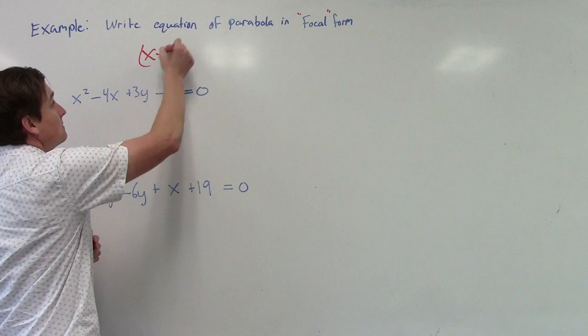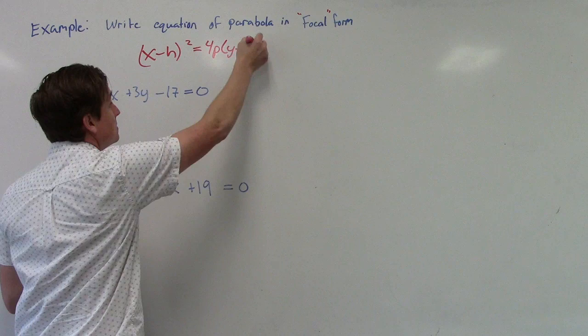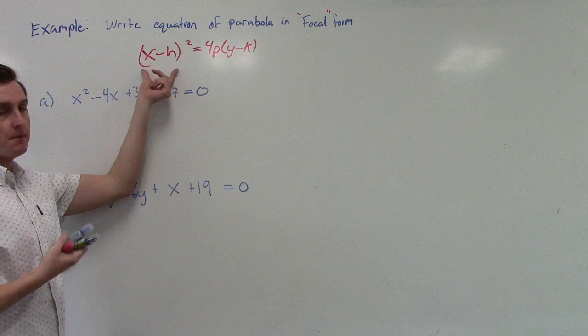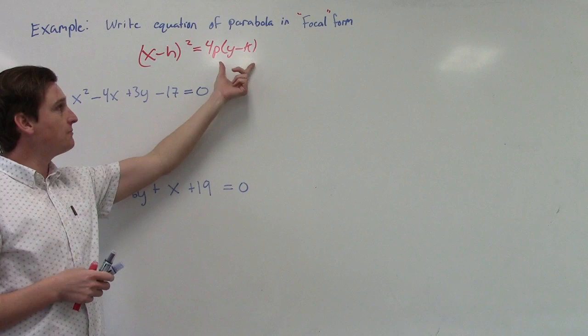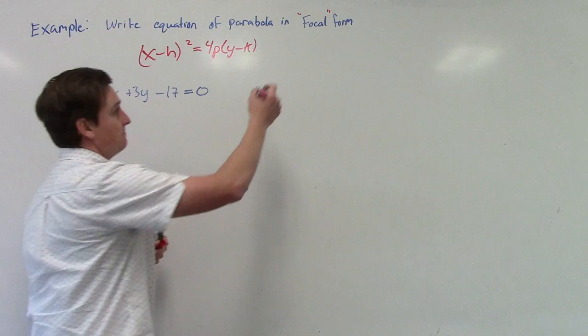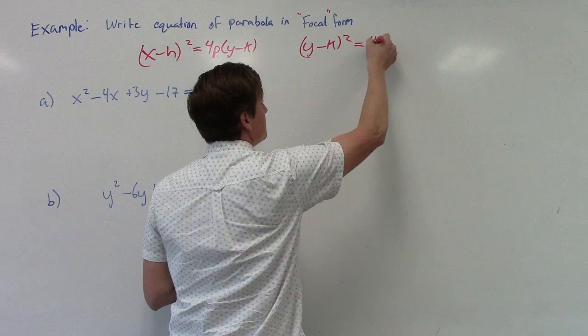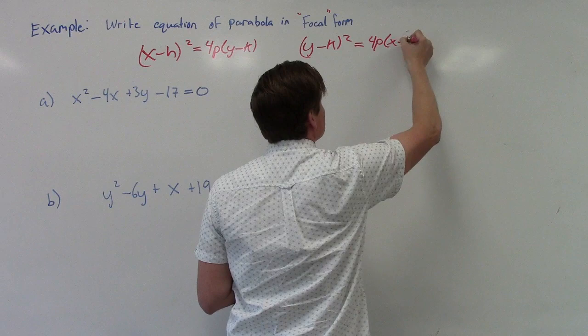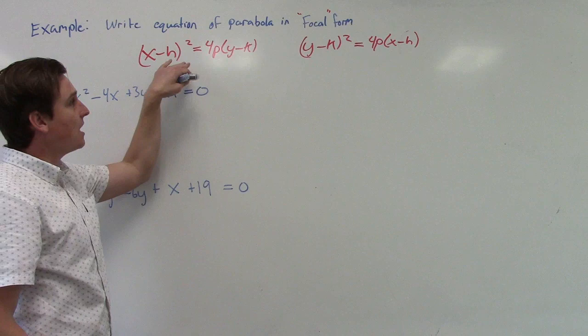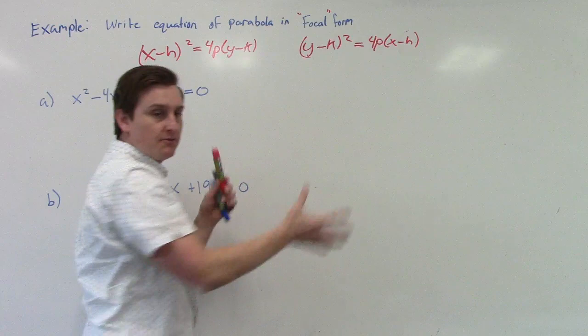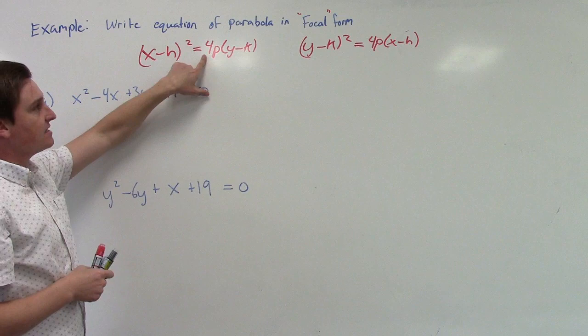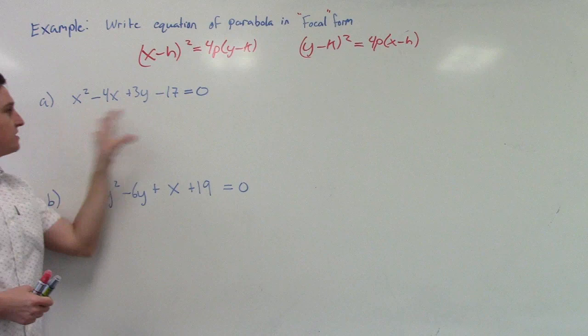Focal form looks something like this. We want x with some number squared, and then some number multiplying a quantity in parentheses with y and another number. We could also potentially have the other way around: y minus k squared equals 4p times x minus h, depending on if the parabola is opening up, down, left, or right. This could potentially be negative, which accounts for all four directions — up or down (negative means down), or left or right (negative means left).